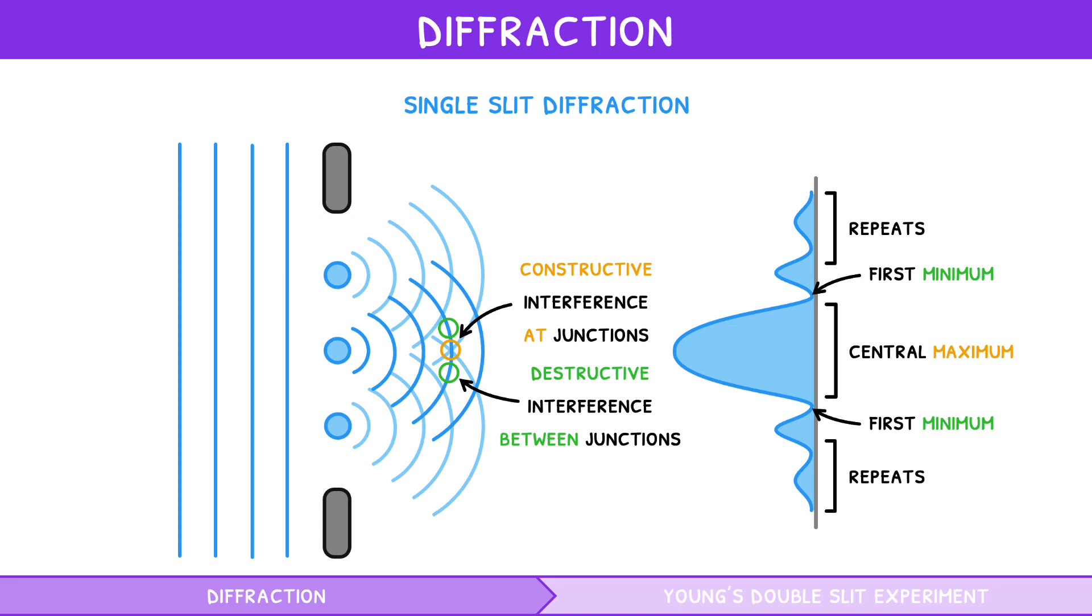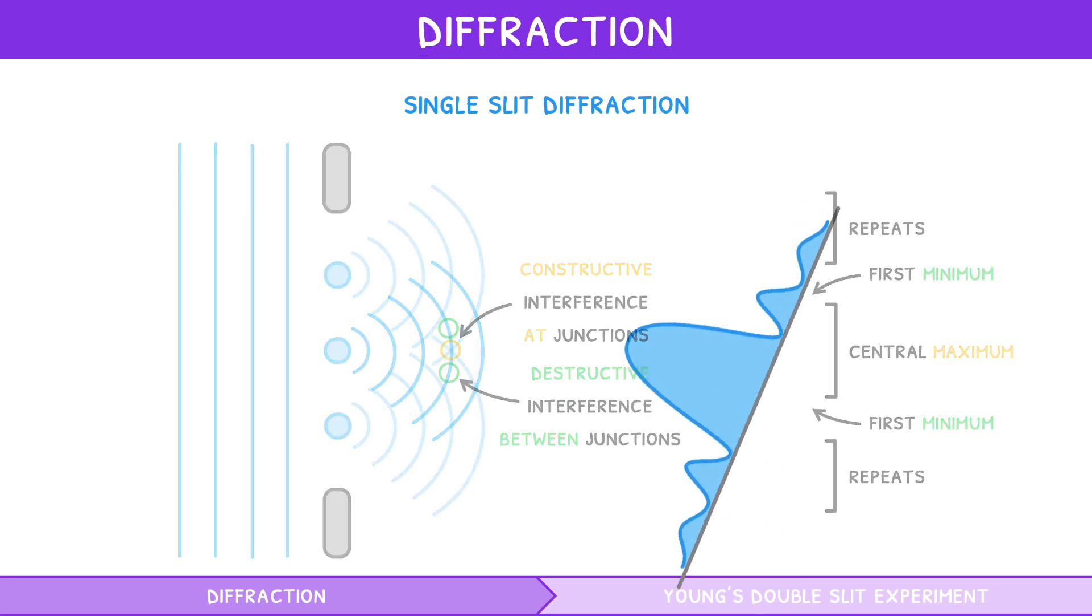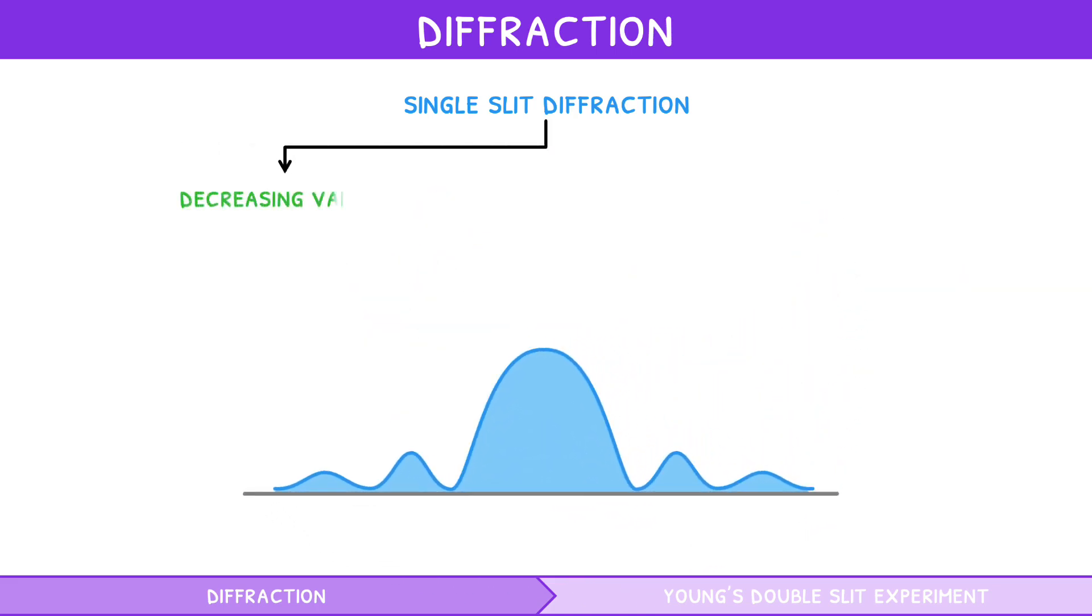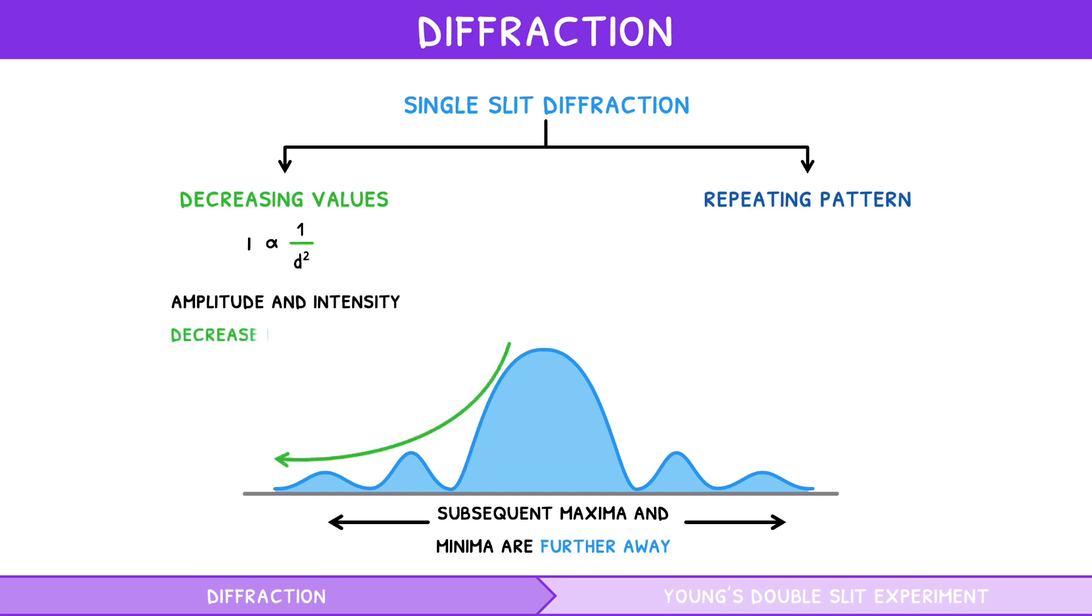Two common sources of confusion regarding this intensity distribution are the decreasing amplitude and intensity, and the repeating pattern of maxima and minima. Both these trends are a direct result of subsequent maxima and minima being further away from the slit. We know from the inverse square law that intensity is inversely proportional to the square of the distance, so amplitude and intensity decrease exponentially.